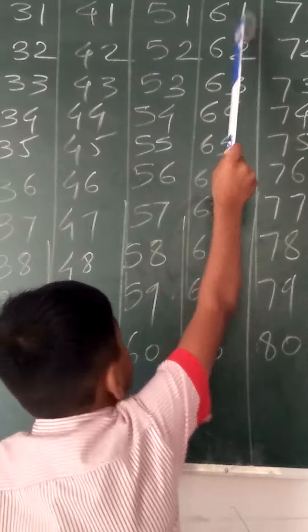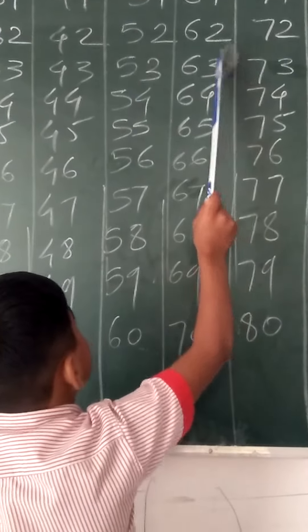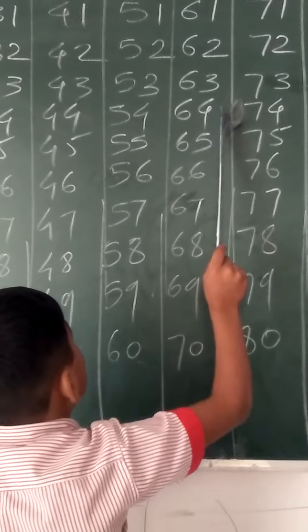Thirty two, thirty three, thirty four, thirty five, thirty six, thirty seven, thirty eight, thirty nine, forty.